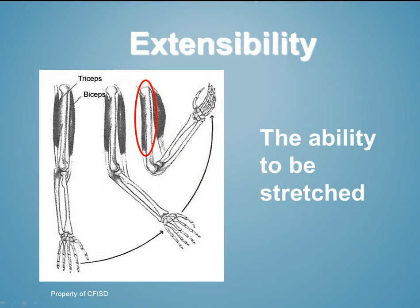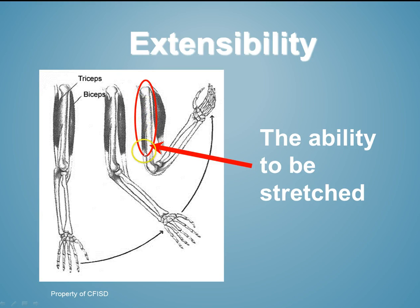The opposite is extensibility — this is the ability of the muscles to stretch. So when your biceps contracts, your triceps, which is on the back of your arm, is extended. The extensibility of that muscle happens whenever the opposite muscle is contracted.